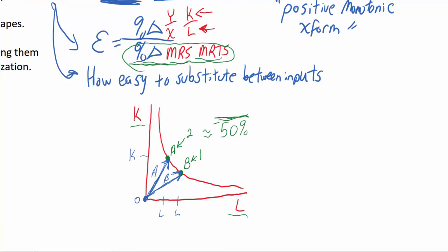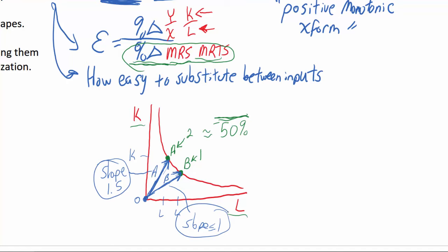The capital-labor ratio is going to be lower at B because the slope of ray B is not as steep as ray A. Let's assume the slope of ray A is 1.5 and the slope at B is 1. Going from 1.5 to 1 is about a 33% decrease. So we would say that the elasticity of substitution along this arc between A and B would be around 0.66.